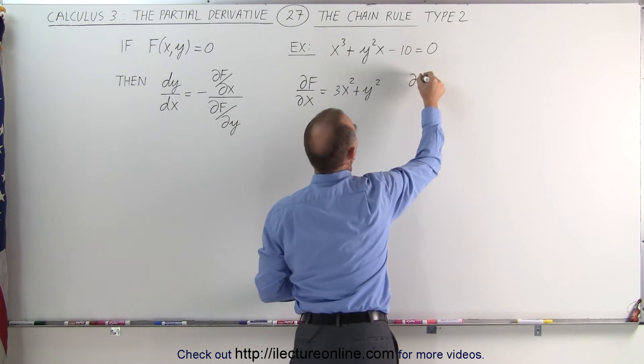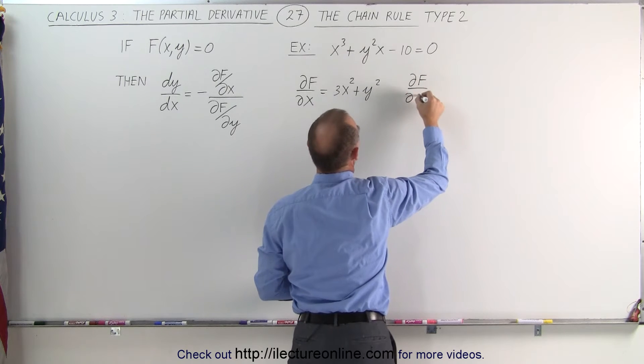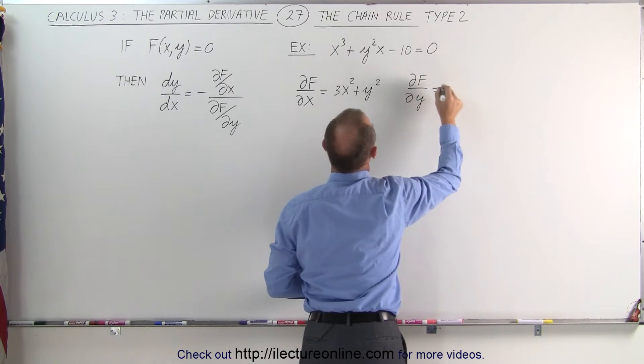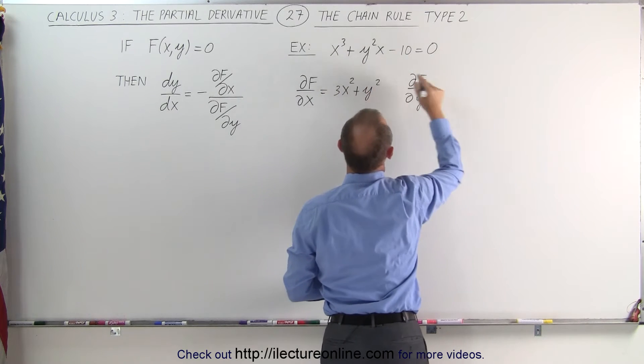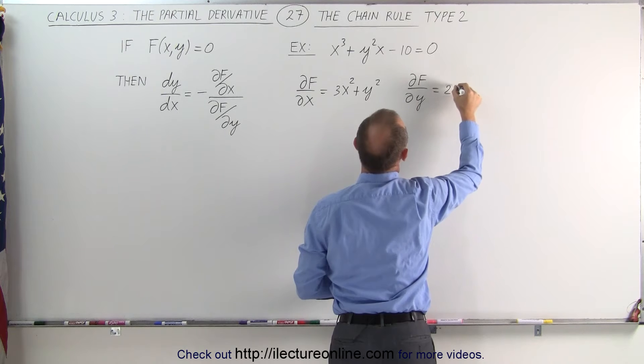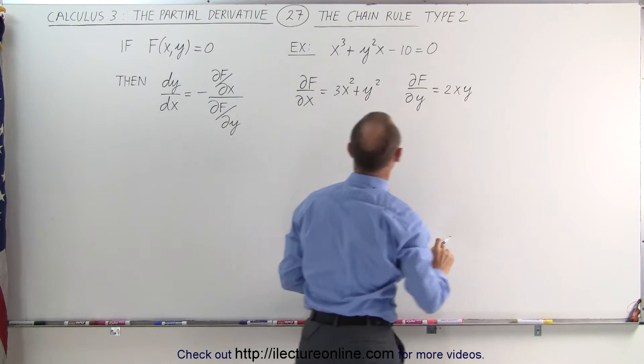Now we take the partial derivative of f with respect to y. The x cubed term gives zero, and the y squared x term gives 2x times y. The derivative of the constant term is also zero.